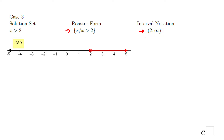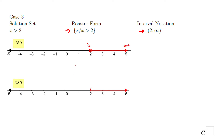This is one way to show the graphical solution. You notice now we have an empty dot — the shading is towards infinity, because that's the solution set. The second way: instead of an empty dot, we have a parenthesis, and the same shading towards infinity.